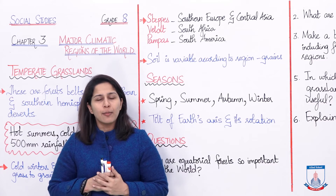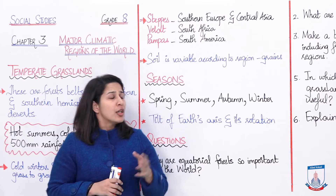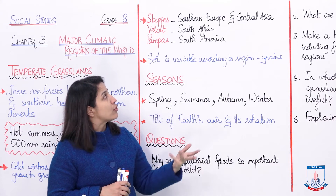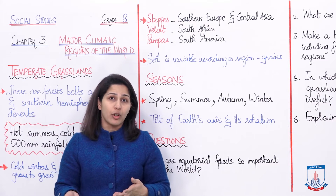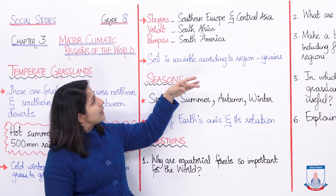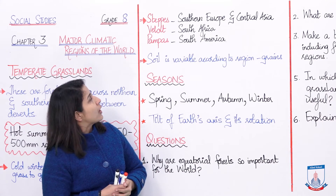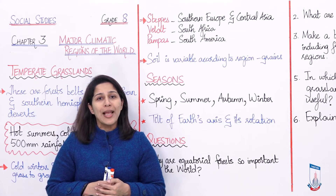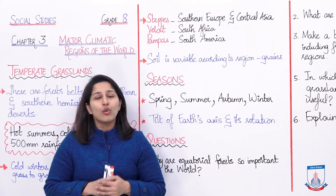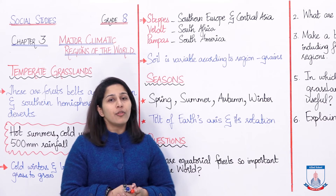Temperate grasslands are known by very different names, especially based on the regions where they are found. You can see grasslands in southern Europe, central Asia, south Africa, south America, and north America. According to regions, they have been given different names: in southern Europe and central Asia, they are known as steppes; in south Africa, they are known as veldt; and in south America, they are known as pampas.